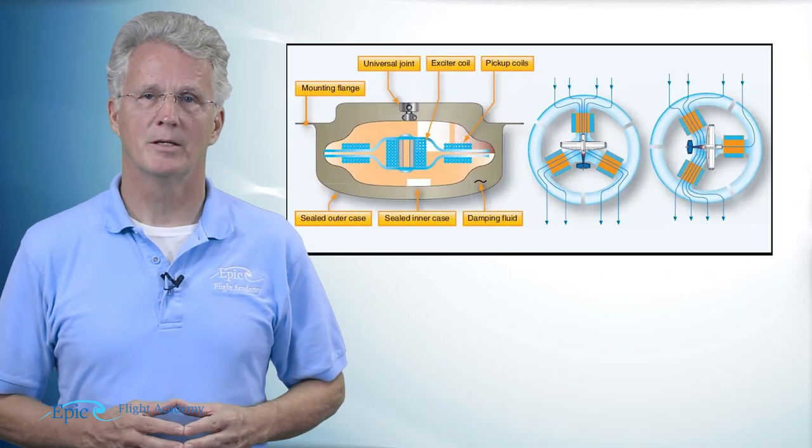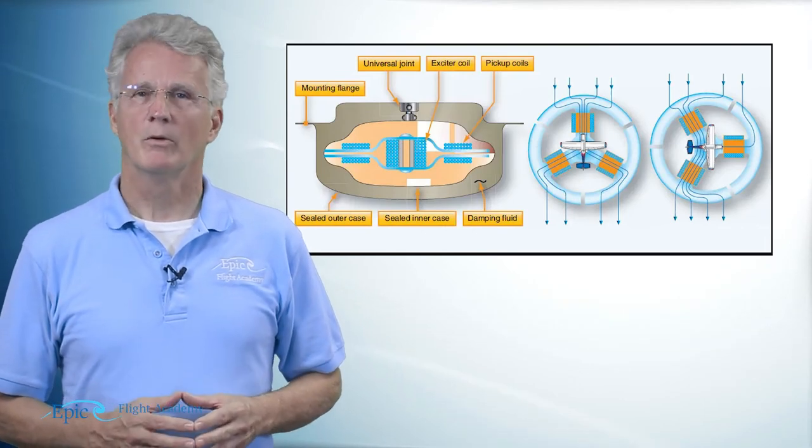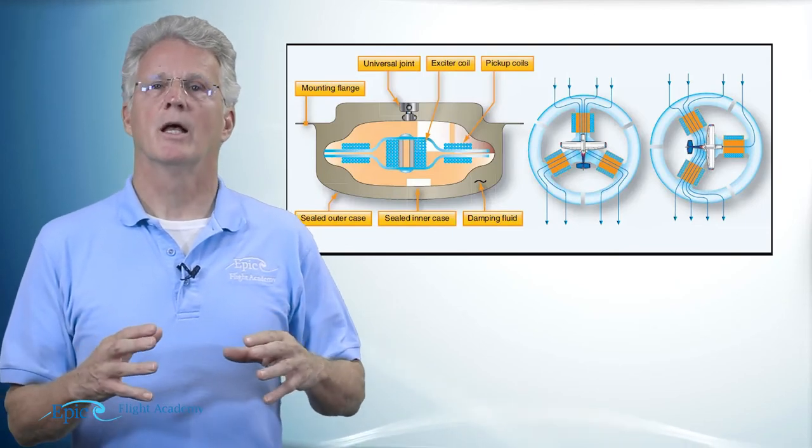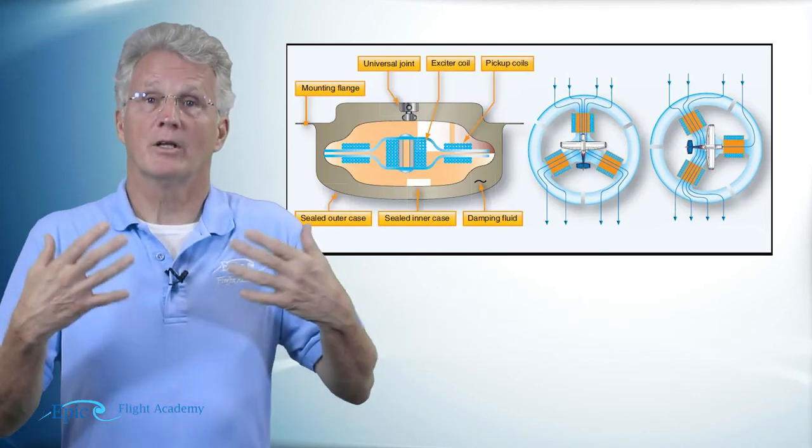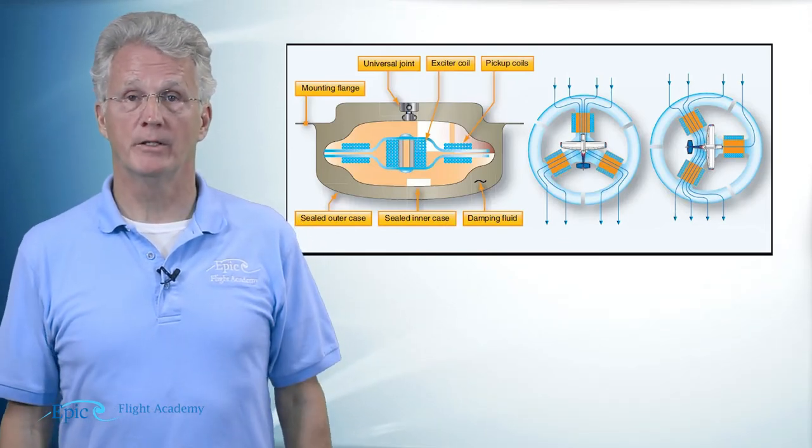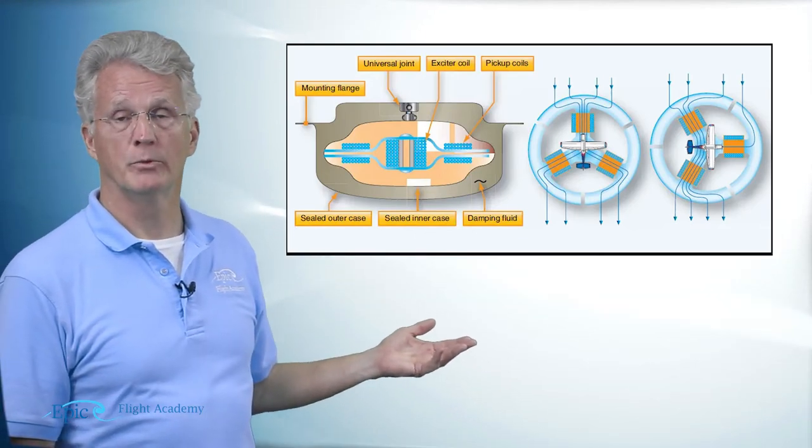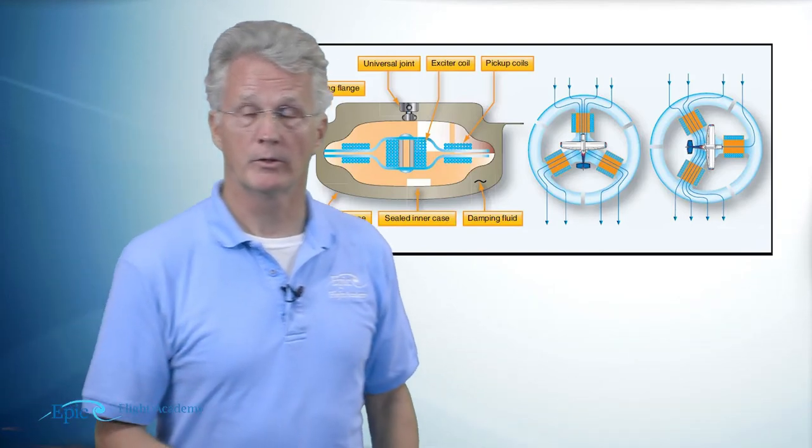On the G1000 we have what we call a flux gate magnetometer. Now that's neat because what it means is this flux gate magnetometer is an electrical magnet interacting with the flux lines of the Earth's magnetic field, and it's keeping this compass card on your G1000 consistently oriented to magnetic north.